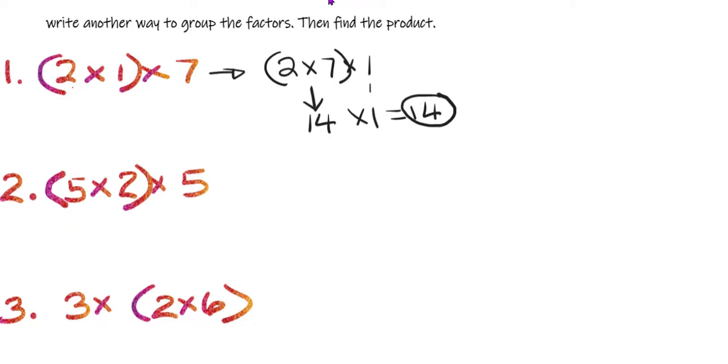Now I'm going to solve this one and see if I still get 14. So do what's in the parentheses first. Two times one is two. And then two times seven, the other factor here, is 14. So my answer in both cases is 14.